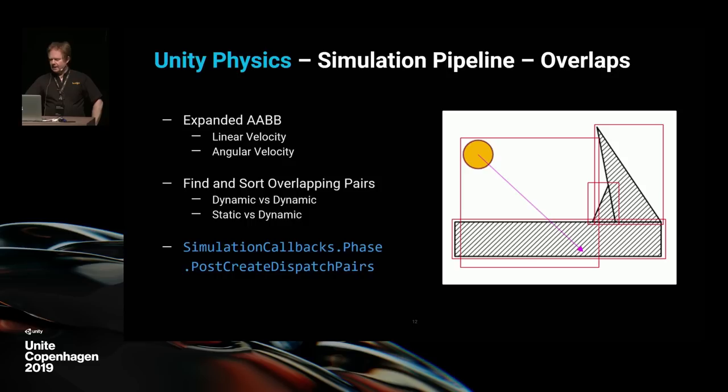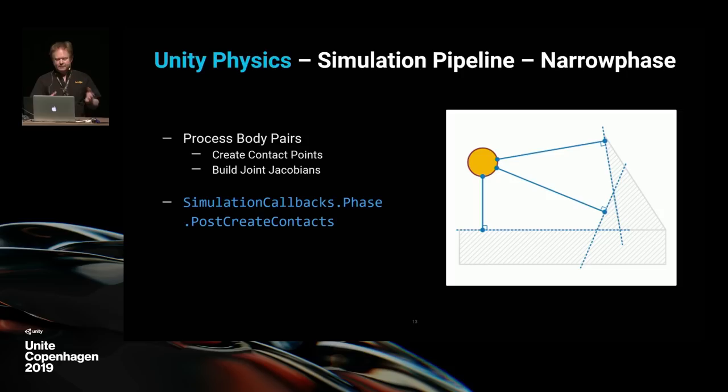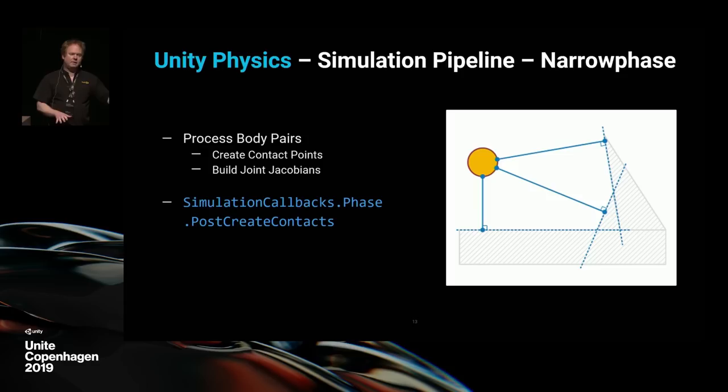In the narrow phase, you're creating all those contact points — getting the normal and the closest distance to objects you overlapped in the previous section. There's another callback: post-create contacts. You might use this for back-face culling on a mesh object so you can only collide in one direction based on face winding, or it might be like a displacement map idea. Even if you have a flat tessellated plane for your level, you could use this callback to add a jitter to the contact normals as the body moves across, adding detail.